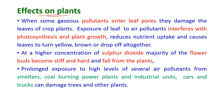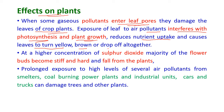Effects of air pollution on plants: when gaseous pollutants enter the leaf pores, they damage the leaves of crop plants. Exposure of leaves to air pollutants interferes with the photosynthesis process and plant growth, reducing nutrient uptake and causing leaves to turn yellow, brown, or sometimes drop off altogether.